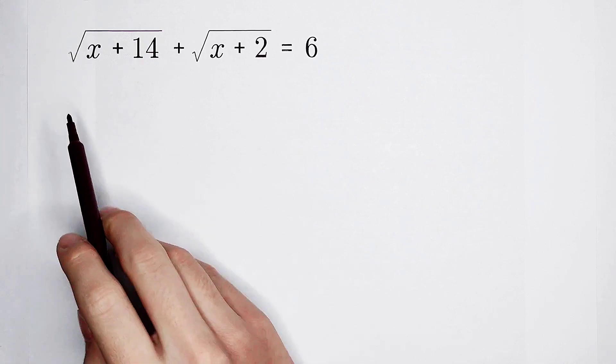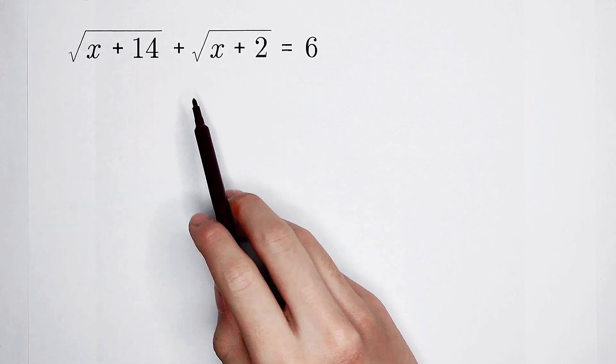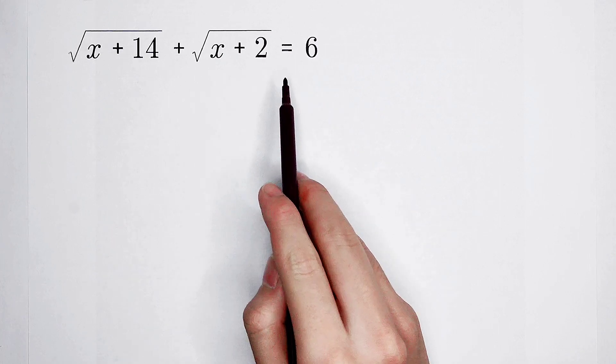Solve this equation: square root of x plus 14, then plus square root of x plus 2 equals 6.